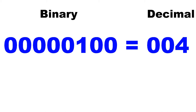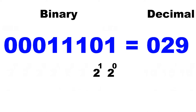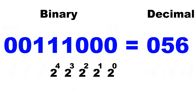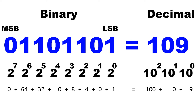Each digit of a binary number represents an increasing power of 2, with the rightmost digit representing 2 raised to the exponent 0, the next representing 2 raised to the exponent 1, then 2 raised to the exponent 2, and so on. The rightmost digit is also named the least significant bit (LSB), while the leftmost digit is named the most significant bit (MSB).